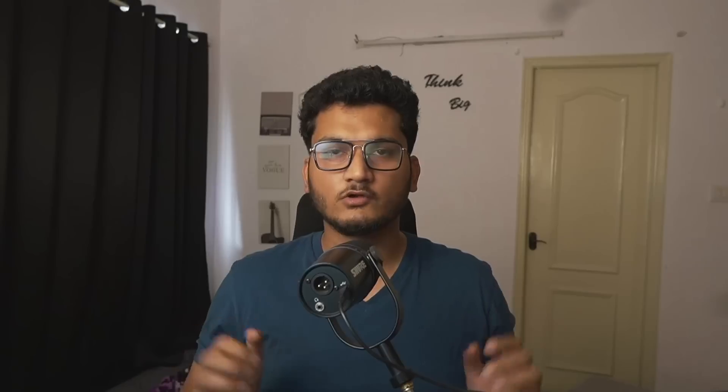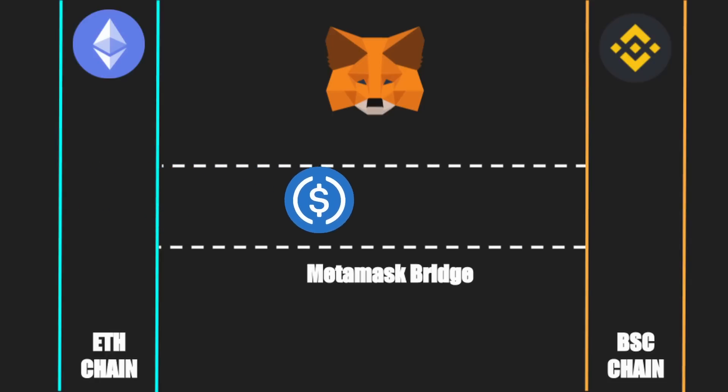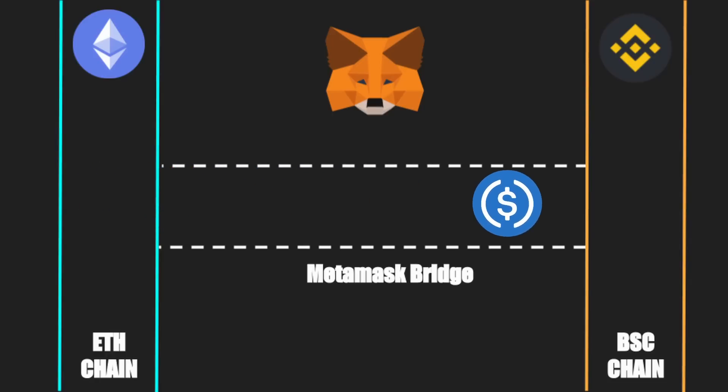To claim this airdrop, you need to use the swap function of MetaMask and then send the swapped funds using a bridge to another chain. For example, in this guide I will do it on the Ethereum chain and then send the funds to the Binance chain. You can also do this swap on Binance chain, say exchanging one BNB for some USDT, and then send those funds using a bridge to the Ethereum chain or the AVAX chain.